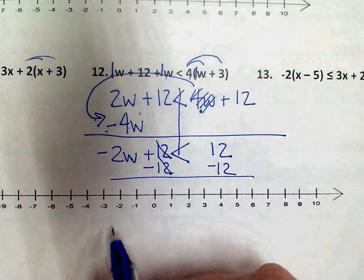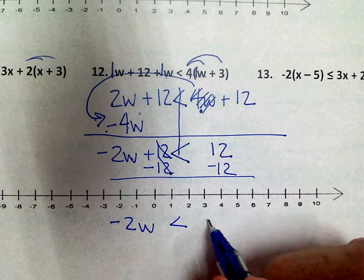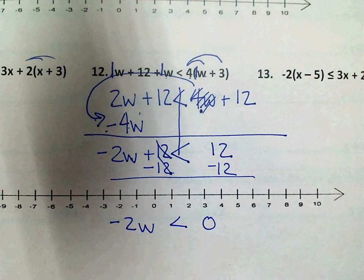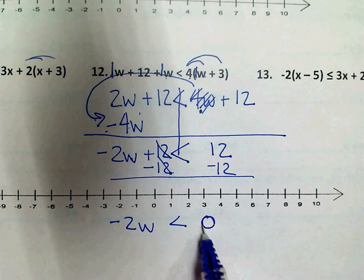On this side, I have negative 2W. Over here, 12 minus 12 is 0, and be careful because a lot of times when we see a 0 here,